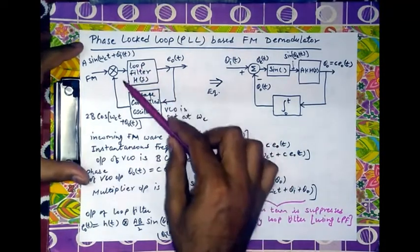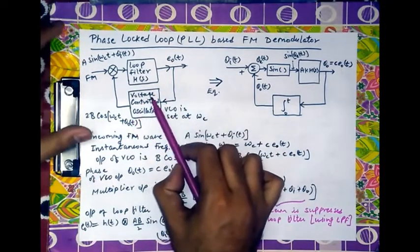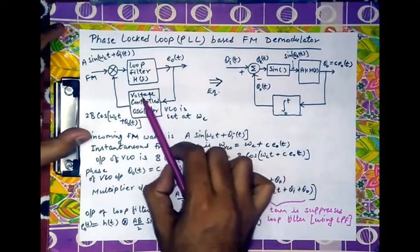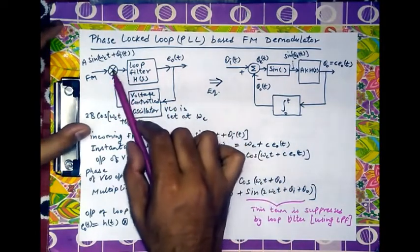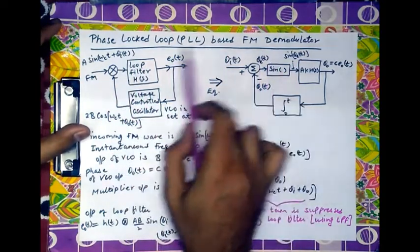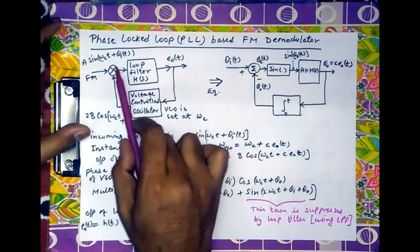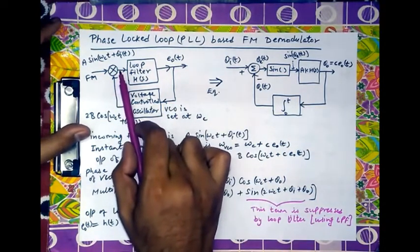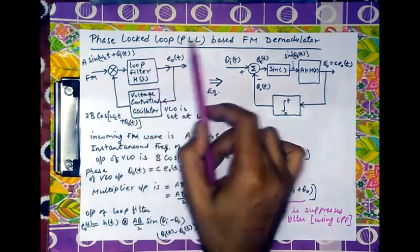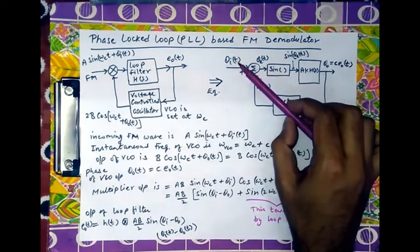The circuit has a loop filter with transfer function H(s) and a voltage controlled oscillator at the feedback of the loop. The output is fed back through the VCO to the input, and the incoming FM wave to be demodulated is fed with this feedback output, multiplied together, and the multiplier output is fed back to the loop filter.